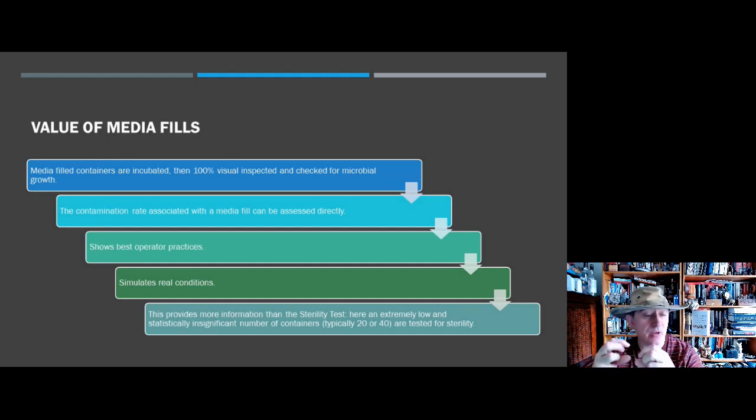The sterility test only requires 20 vials typically, sometimes 10 vials, and these are taken generally from different sequences within the fill. But the chances of capturing anything is relatively low. The media fill gives us greater feeling of confidence that we're doing best practices.